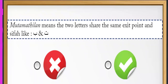True or false: متقاربين means the two letters share the same exact point and sifa, like بَ and تَ. The student says true. Discussion: بَ comes from the lips and تَ comes from the tongue — they do not share the same exact point. They share a similar sifa but not the same makhraj. That definition would be متماثلين. So متقاربين means letters that are close in makhraj or sifa, not identical. Answer: true — they share similar sifa.